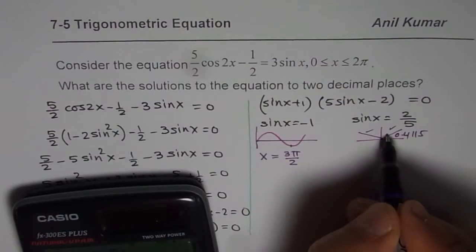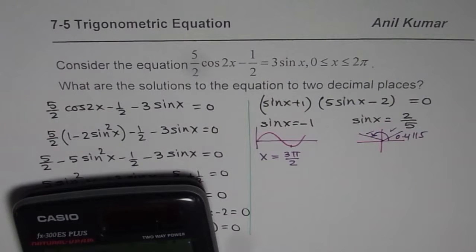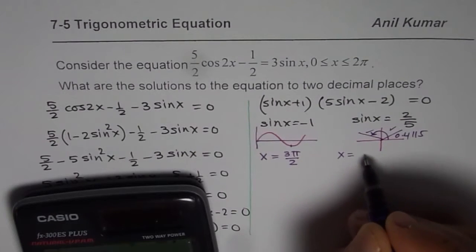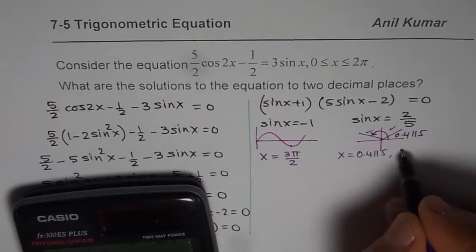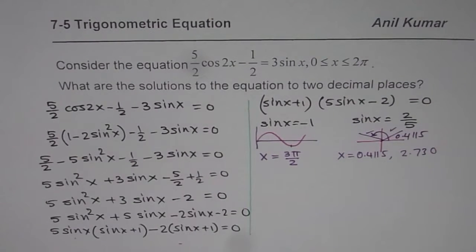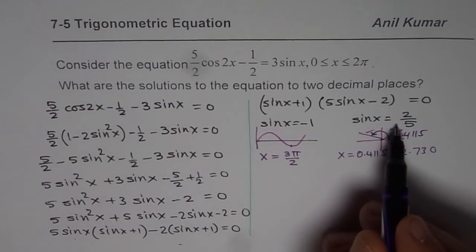The other one will be π minus this acute angle. So we will do shift and π minus 0.4115 equals 2.73. So we get two answers here. We can write x as 0.4115 or 2.730, which is π minus the alpha, the acute angle. These are the two possible solutions from the other factor.